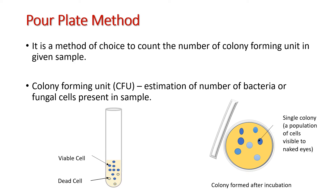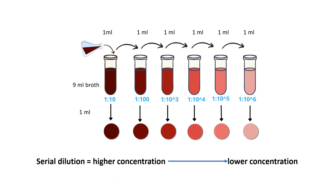A single viable cell of bacteria or fungi is able to produce a single colony of cells by binary fission under controlled conditions. This single viable cell is called a colony forming unit (CFU). In other words, CFU is an estimation of the number of bacteria or fungal cells present in a sample. CFU is visible to the naked eye.